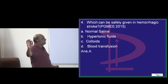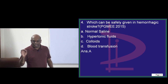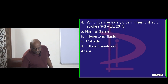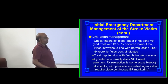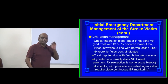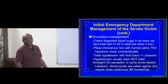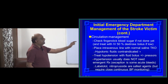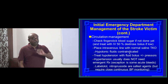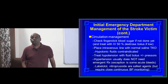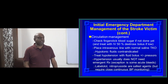Normal saline is a good IV fluid of choice in case of hemorrhagic stroke. First thing, you should check for the blood sugar. You need to administer normal saline. Hypotonic fluids are absolutely no-no in the situation of hemorrhagic stroke.